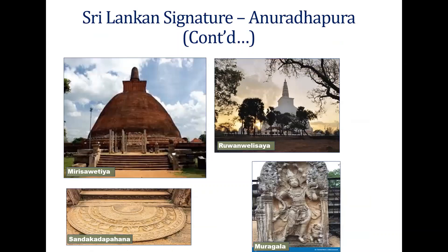You can see at the bottom the Muragali — the guard stone — and the Sandakadapahana — a stepping stone to any important building. You can see how finely they have been carved; there must have been some very advanced technology at that time. You can also see the two stupas — Mirisavati and Ruwanwelisaya — which are huge structures.